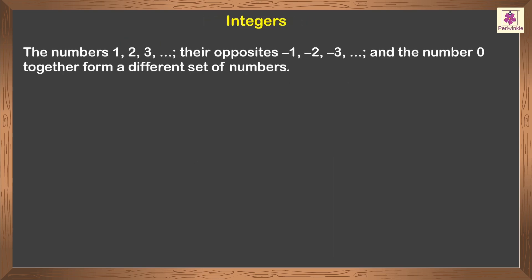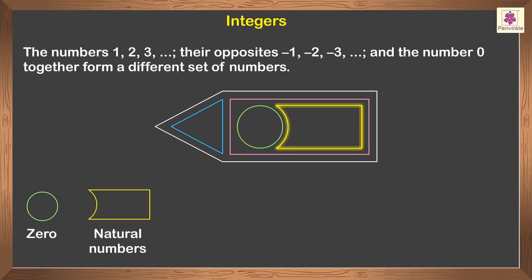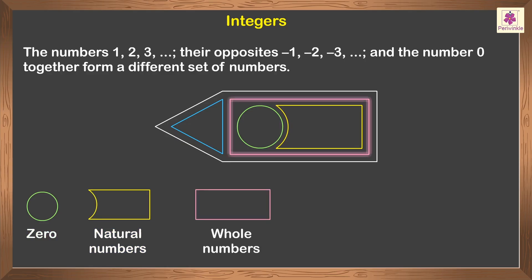Integers: the numbers one, two, three, and so on; their opposites, negative one, negative two, negative three, and so on; and the number zero together form a different set of numbers. In this combination, each shape represents a particular number or set of numbers. The circle represents zero, this shape represents natural numbers, the rectangle represents whole numbers, and the triangle represents negative numbers.